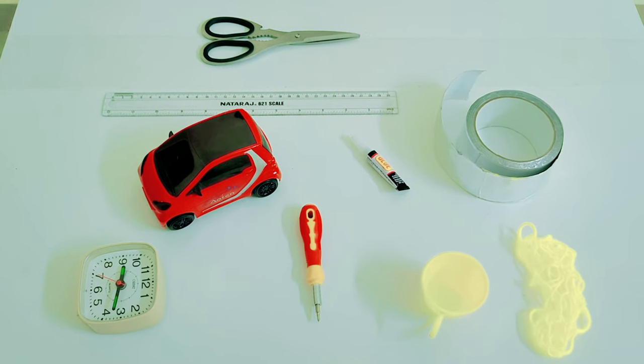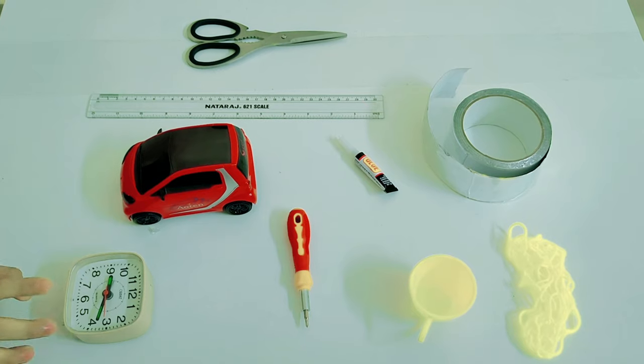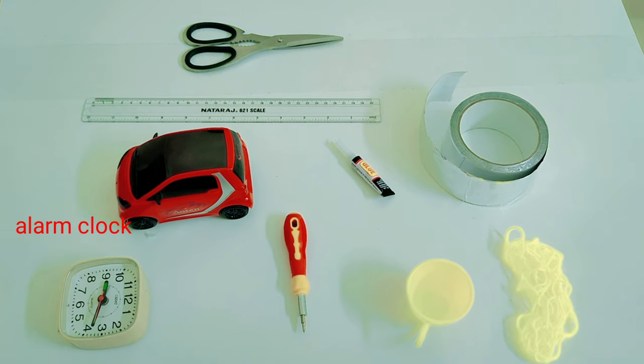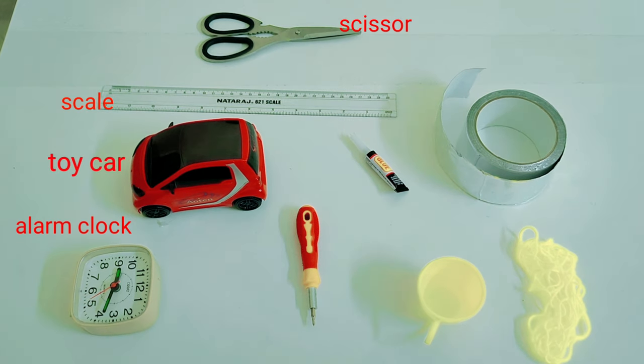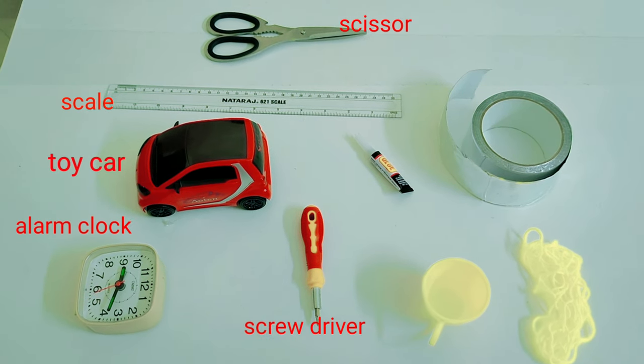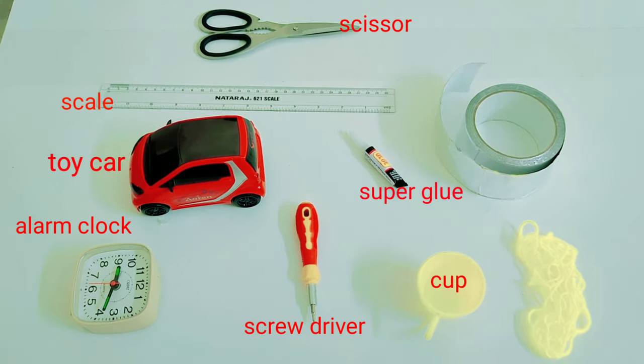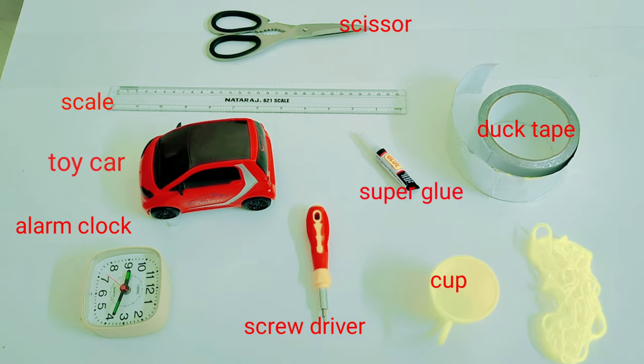To make a water alarm, we need a laptop, a toy car, a scale, scissors, a screwdriver, some glue, a cup, a duct kit, and a thread.